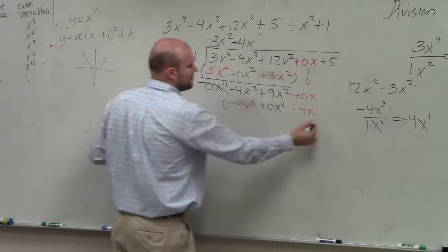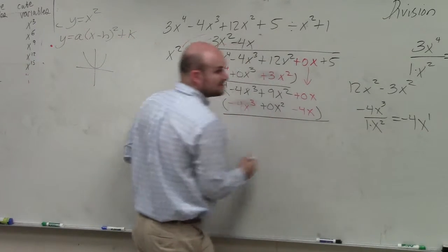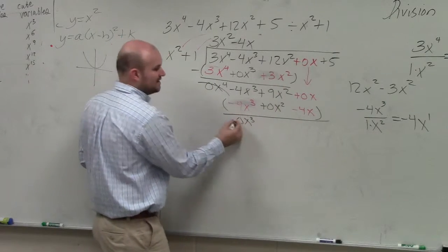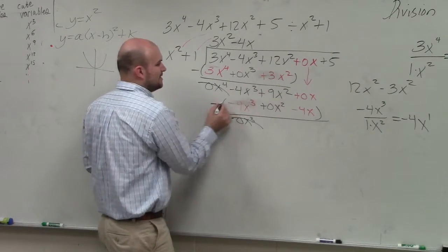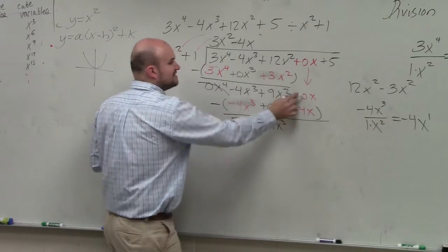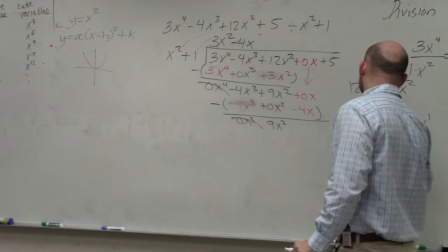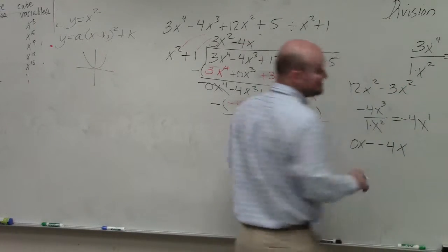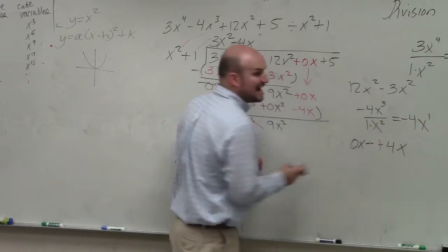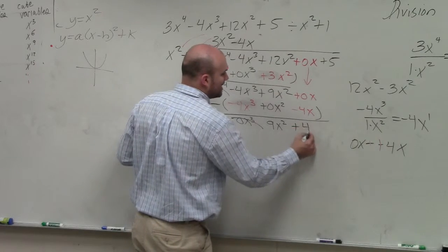So now I subtract the rows. Negative 4x cubed minus negative 4x cubed is 0x cubed. If you guys notice, that pattern is always going to happen. 9x squared minus 0x squared is 9x squared. And then 0x minus a negative—remember, minus a negative, guys, is the same thing as adding, right? So that is now a positive 4x.